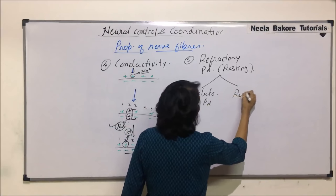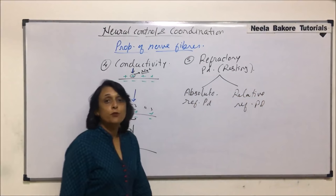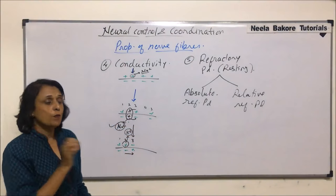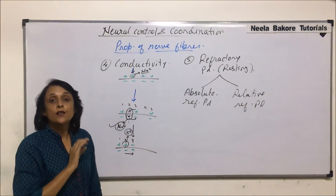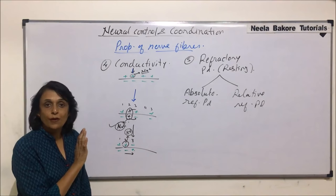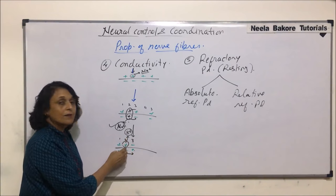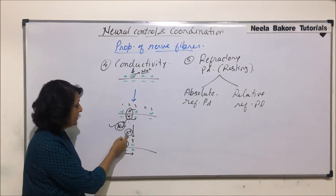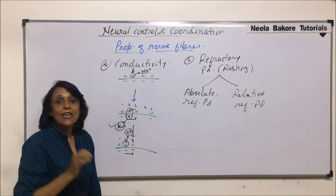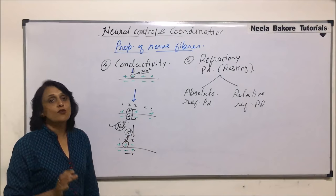The refractory period is divided into two categories: absolute refractory period and relative refractory period. The absolute refractory period is where even if you provide a threshold stimulus, the nerve is not going to get excited — there is no sodium ion in that area, so even if sodium channels open, there is no sodium. Absolute refractory period is when even after giving a threshold value stimulus, the nerve fiber is not going to get excited.